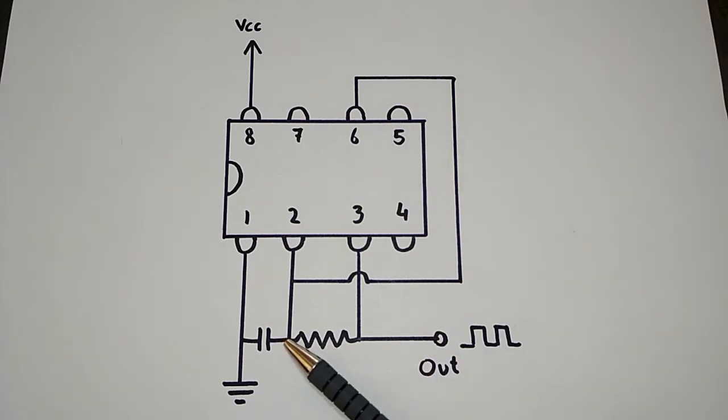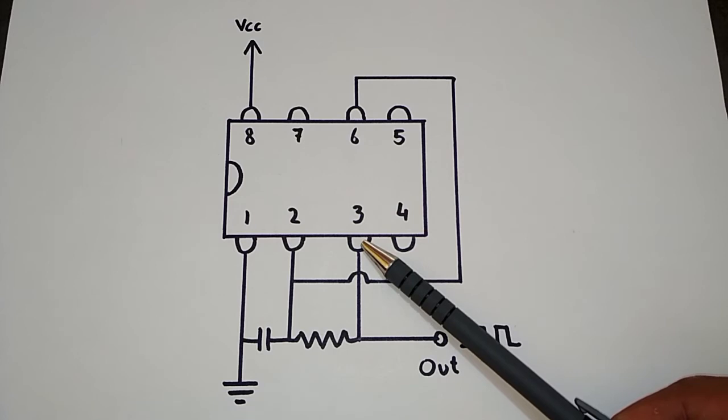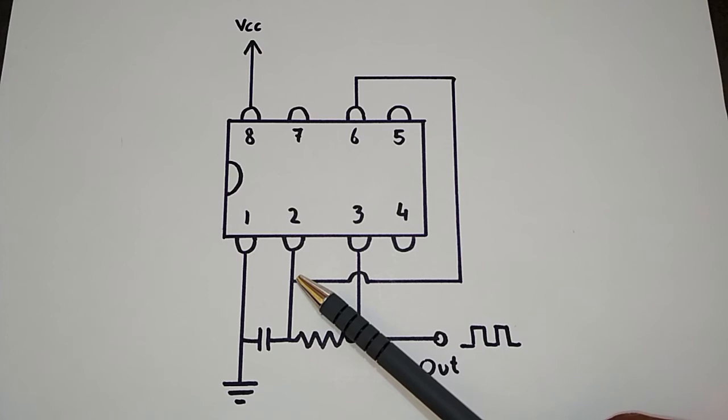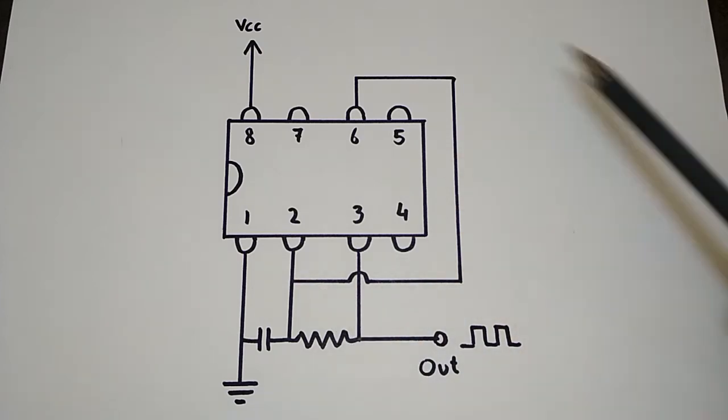In fact, pin 3 is very capable of sinking current, just like it can source it. Now once the capacitor gets down to ⅓ Vcc, pin 2, which is trigger, will bring the output high again, which will make the whole thing repeat over and over.